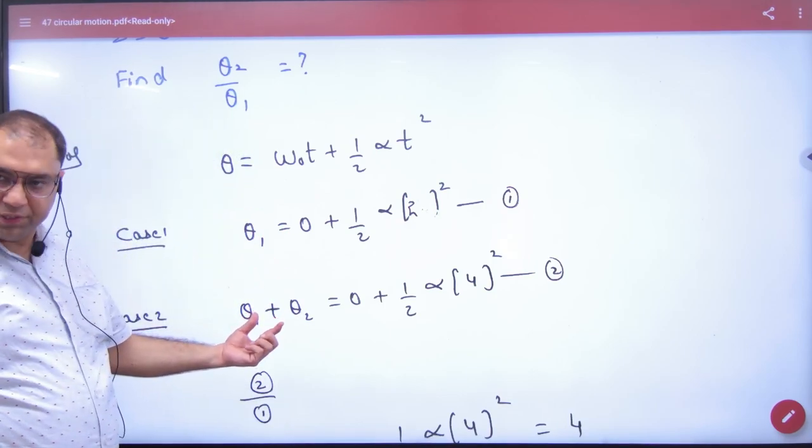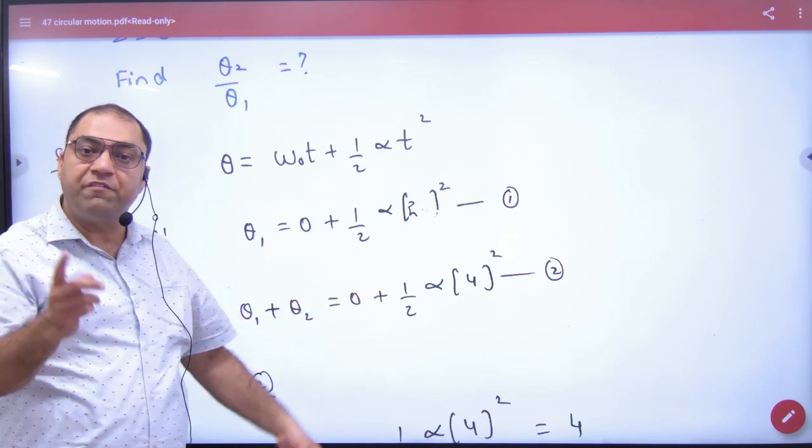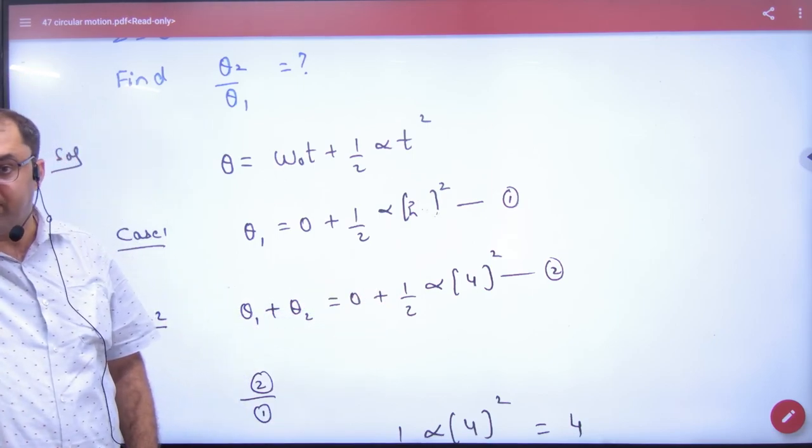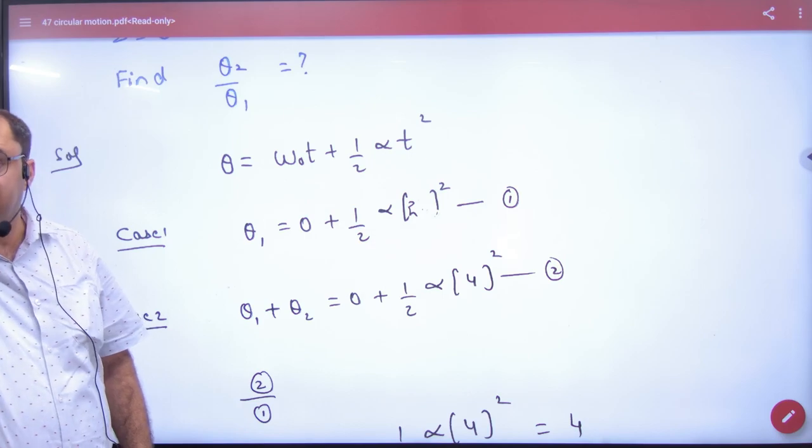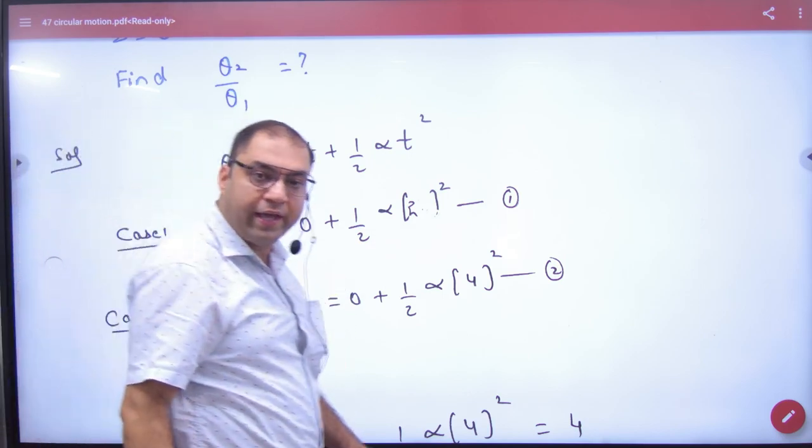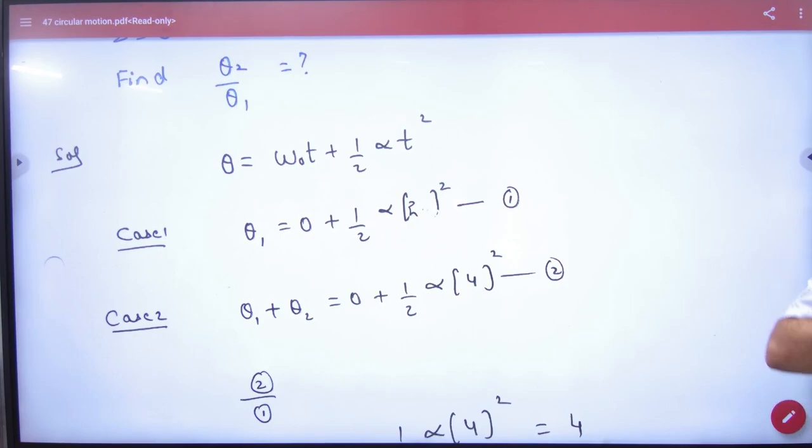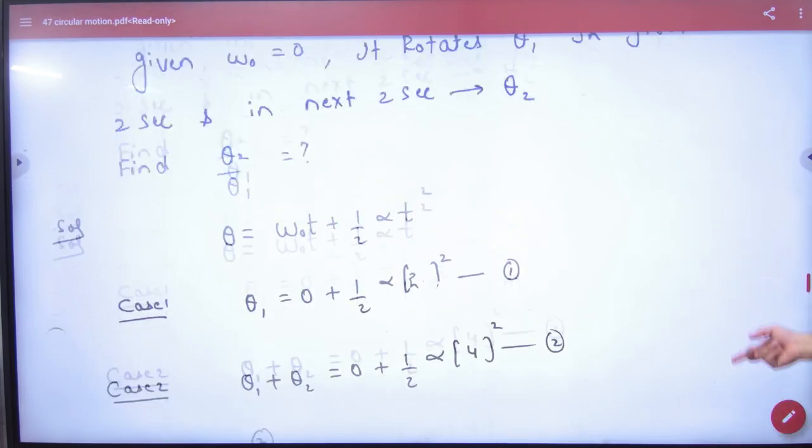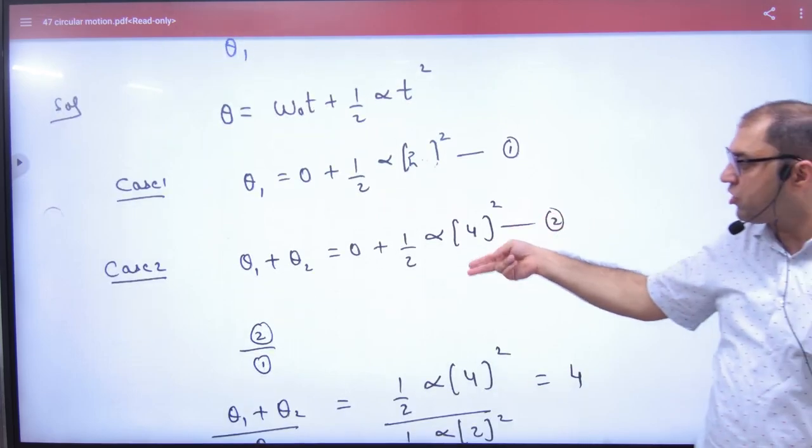What will we do? Theta1 plus theta2. Zero plus half into alpha into four square. Because what is the time now? Four. Why did we take the time now? Because what is omega not? Zero. Because we don't have to remove omega. Omega not both cases will be zero. So, you want to remove the ratio of both theta. So, let's divide the question number two and one.